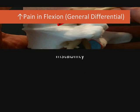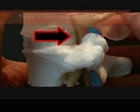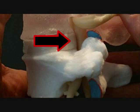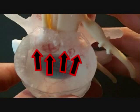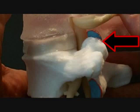Under flexion load, the nucleus pushes posteriorly against the annulus, and the posterior aspect of the annulus is innervated with the sine vertebral nerve. You can demonstrate to patients the innervation of the outer annulus. Under flexion, the capsule is also going to be stretched, so that's a possible pain generator.